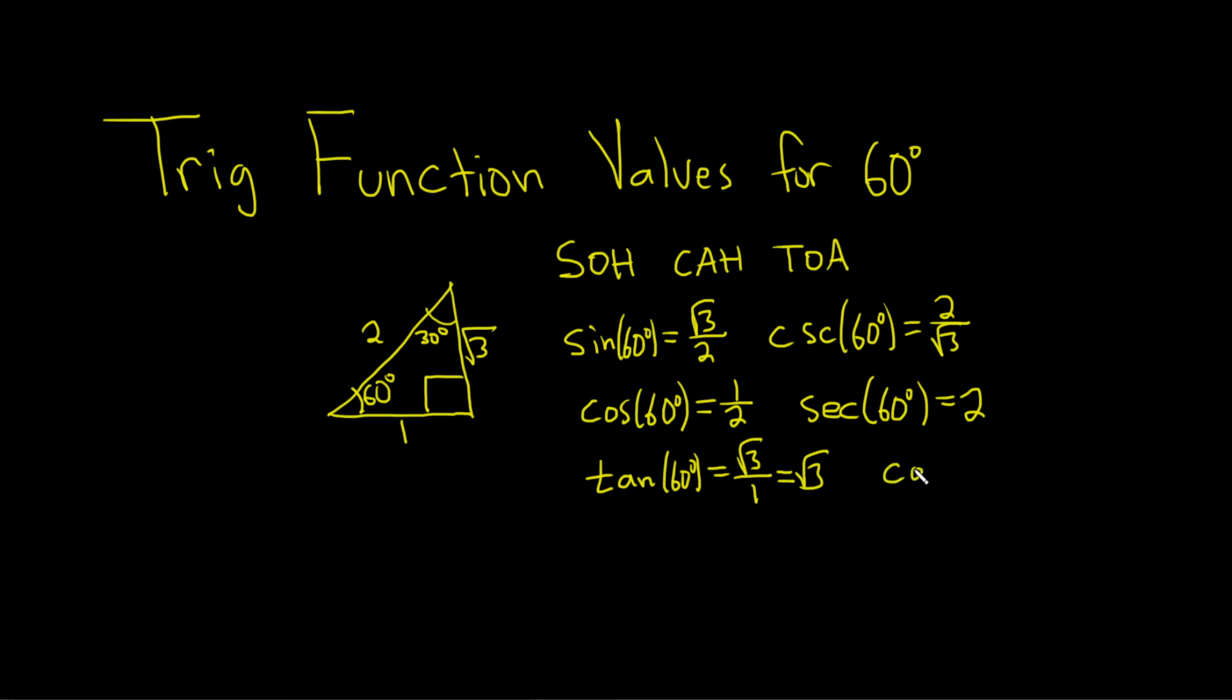And the very last one is cotangent. So you just take the tangent function and you flip it. So this is really a square root of 3 over 1. So when you flip it, you just get 1 over root 3.